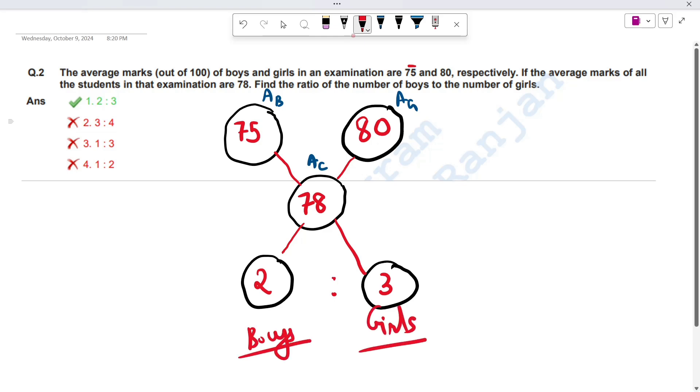This is the boys and girls ratio, which is answer option A, 2 to 3. It's just so easy. Just keep your attention on the combined average and the ratio.